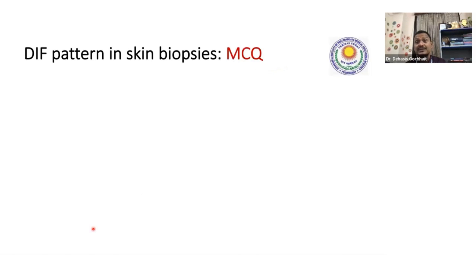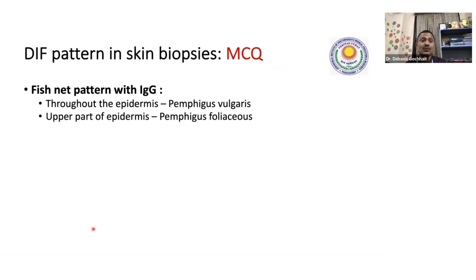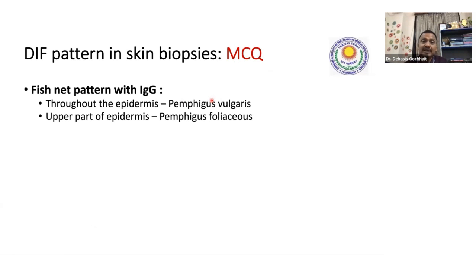In skin biopsies, if you have a fishnet pattern, think of pemphigus. Fish net with IgG — think pemphigus. There is a difference between pemphigus vulgaris and pemphigus foliaceus. Pemphigus is an autoimmune disease with autoantibodies against desmoglein — Dsg-1 and Dsg-3. These are variably distributed throughout the epidermis.